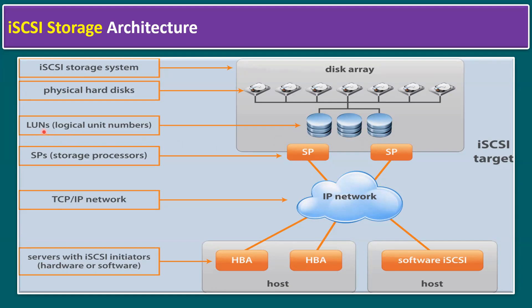LUNs means logical unit number — grouping of multiple disks is nothing but a LUN. We have an iSCSI target configured at the storage level, and that same target must be entered on your ESXi host level. Then only it will get access.